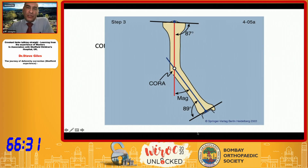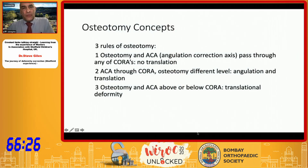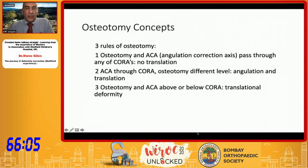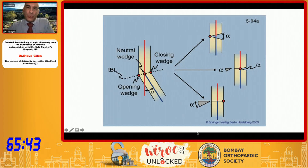That intersection can be bisected and there are various concepts around this. Most of the time, with a rule-one osteotomy where you pass through the angulation and the bisector line, you won't get any translation. When you deviate from the bisector line moving proximally, distally, or away from it, you will introduce translation. You can place your hinge point anywhere on the bisector line and achieve corrected alignment, setting it for either an opening or closing wedge depending on whether you want length.